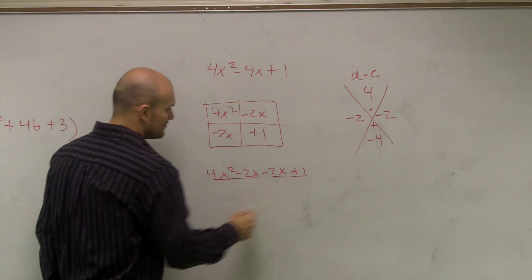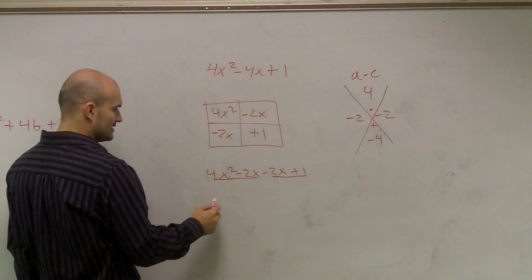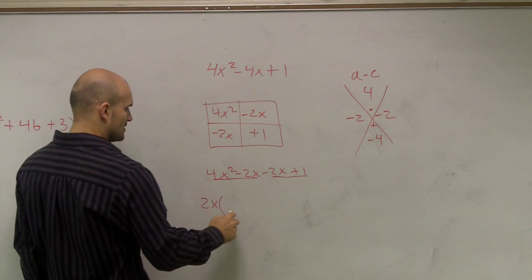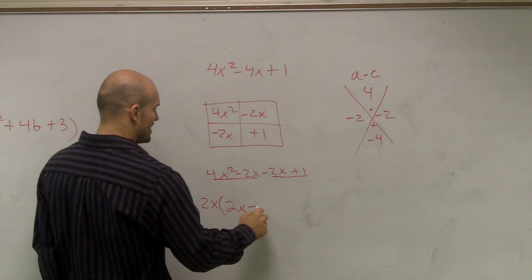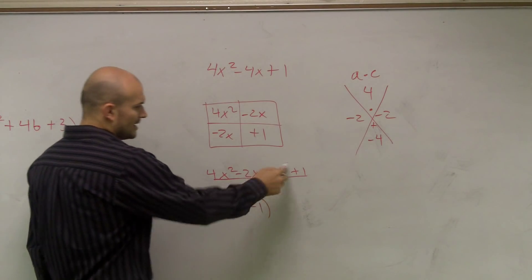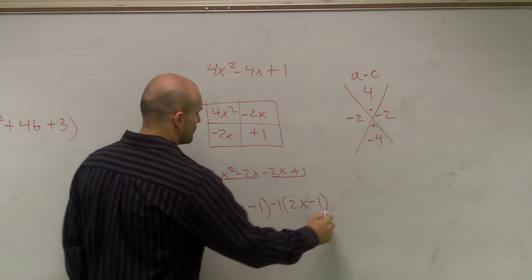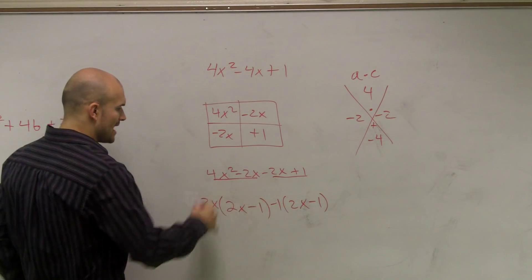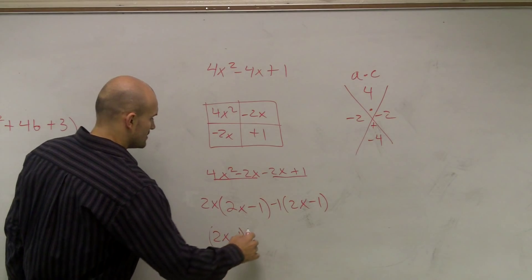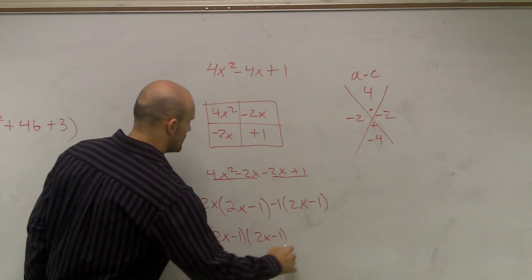Then I can factor by grouping and pull out - what do these have in common? These have a 2x, so I'm left with 2x - 1. Here I can factor out a negative 1, which will leave me with 2x - 1. Since these are both the same, I can factor that out: 2x - 1 times 2x - 1.